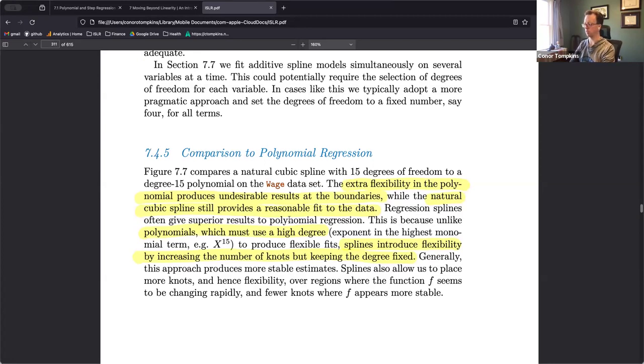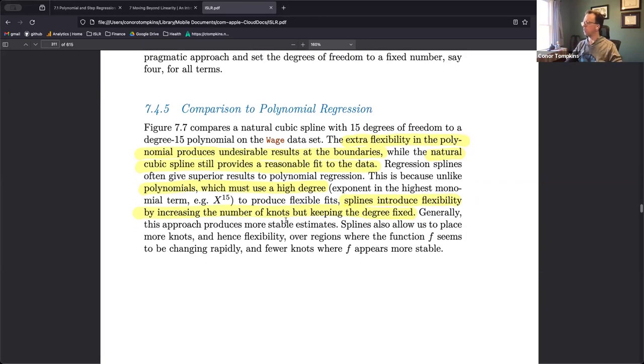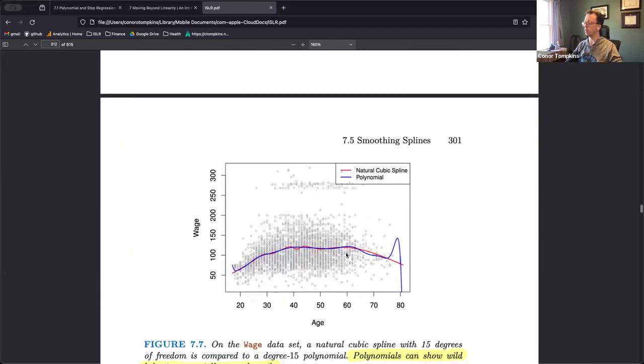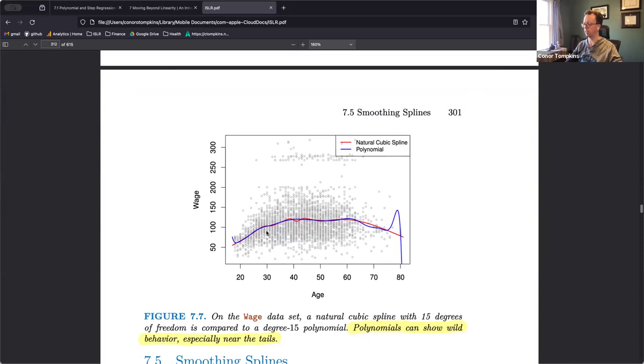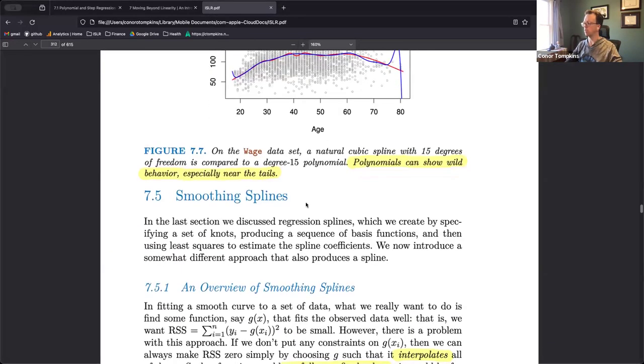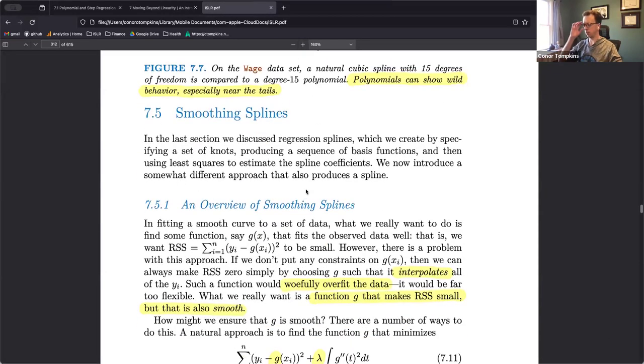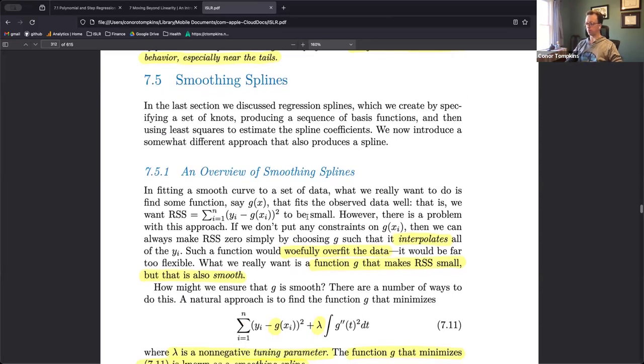So comparing the natural spline to polynomial, the polynomial will behave poorly at the boundaries of the continuous variable, whereas the natural cubic spline does pretty well at the boundary. The spline has fewer degrees of freedom than the polynomial, so that's why it behaves that way. You can see here that they're pretty much the same in the densest area of the data, but they vary a lot on the boundaries. That cubic spline there is pretty aggressively smooth at the boundaries.